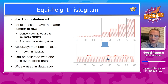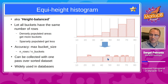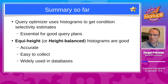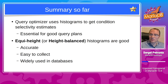That's why equi-height histograms are widely used in databases — for example, Postgres, MySQL, MariaDB, TiDB, CockroachDB all use some variant of equi-height histograms. Summary so far: the query optimizer uses histograms to get condition selectivity estimates, which is essential for good query plans. Equi-height or height-balanced histograms are a good choice — they offer accuracy guarantees, are easy to collect, and are widely used.